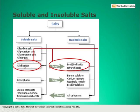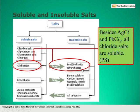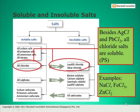All salts that have chloride as the anion are soluble, except lead(II) chloride and silver chloride. The formula of lead(II) chloride is PbCl₂ and that of silver chloride is AgCl. I have taken the first letter of lead — P — and that of silver — S — so PS. Make any word from these two letters to memorize them easily.